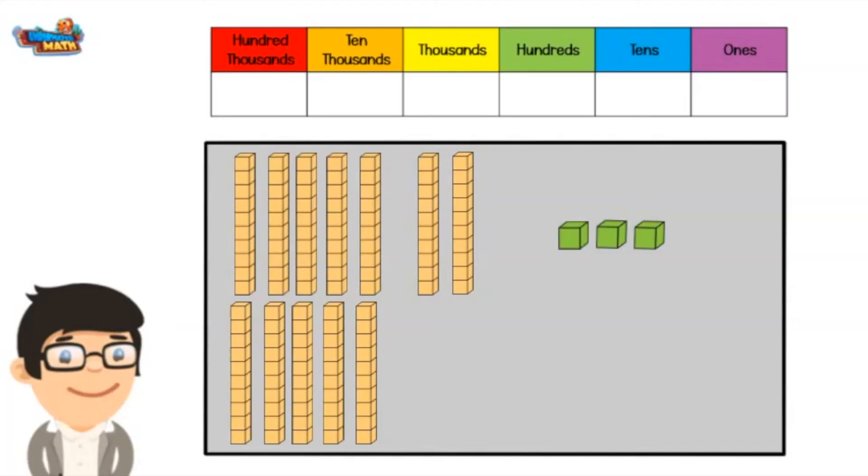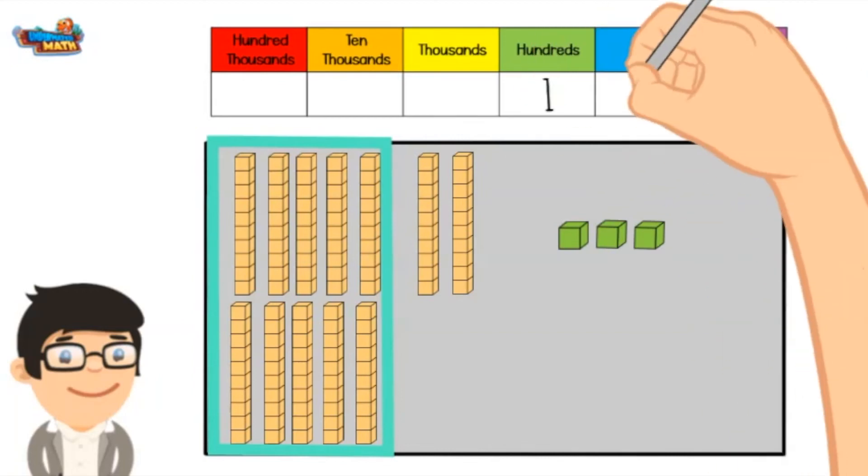Check out this one. There are a lot of groups of 10 and 3 cubes. There are 12 groups of 10. It takes 10 groups of 10 to make 100. There is a 100, 2 tens, and 3 ones. These base-10 blocks represent 123.